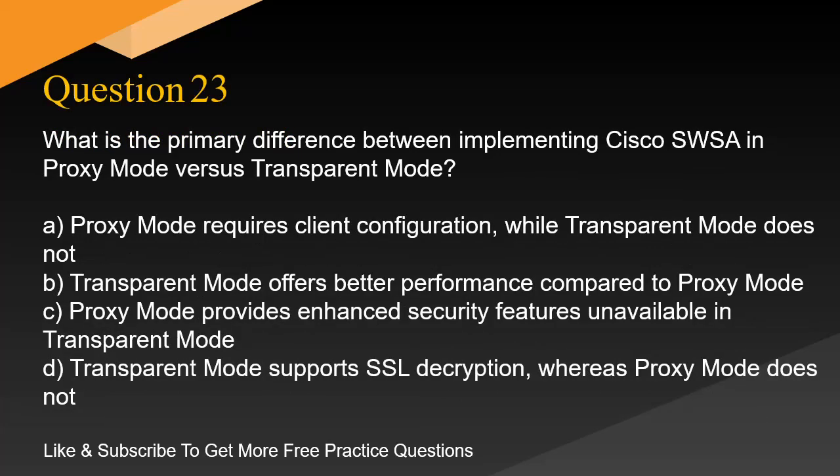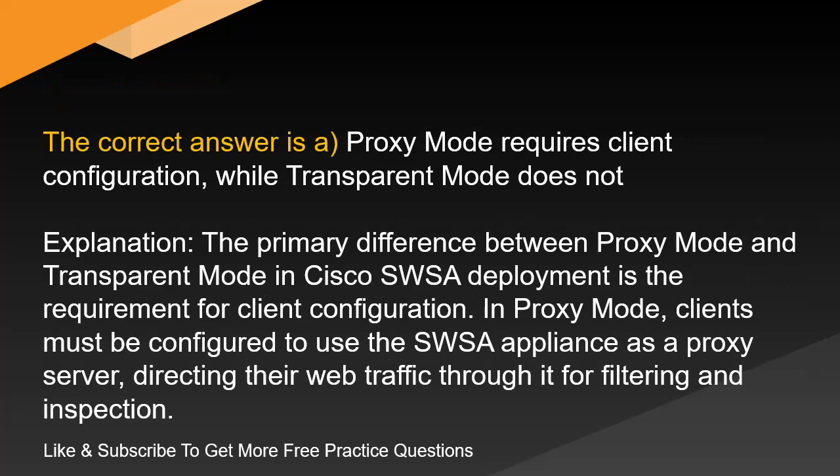Question 23. What is the primary difference between implementing Cisco SWSA in proxy mode versus transparent mode? A. Proxy mode requires client configuration, while transparent mode does not. B. Transparent mode offers better performance compared to proxy mode. C. Proxy mode provides enhanced security features unavailable in transparent mode. D. Transparent mode supports SSL decryption, whereas proxy mode does not. The correct answer is A. Proxy mode requires client configuration, while transparent mode does not. Explanation. The primary difference between proxy mode and transparent mode in Cisco SWSA deployment is the requirement for client configuration. In proxy mode, clients must be configured to use the SWSA appliance as a proxy server, directing their web traffic through it for filtering and inspection.